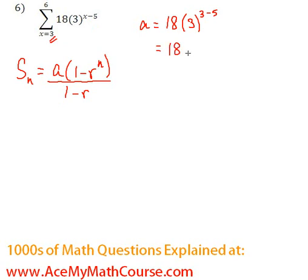Great, so that's going to be 18 times 3 to the power of negative 2. 3 to the power of negative 2 is just 1 over 3 squared.